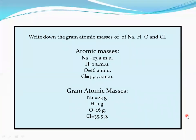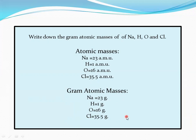How to write gram atomic mass: atomic mass of sodium is 23 AMU, so the gram atomic mass of sodium is 23 grams. Similarly, the gram atomic mass of oxygen is 16 grams. Chlorine atomic mass is 35.5 AMU, so its gram atomic mass is 35.5 grams. We simply replace AMU with grams, and it becomes gram atomic mass instead of atomic mass.